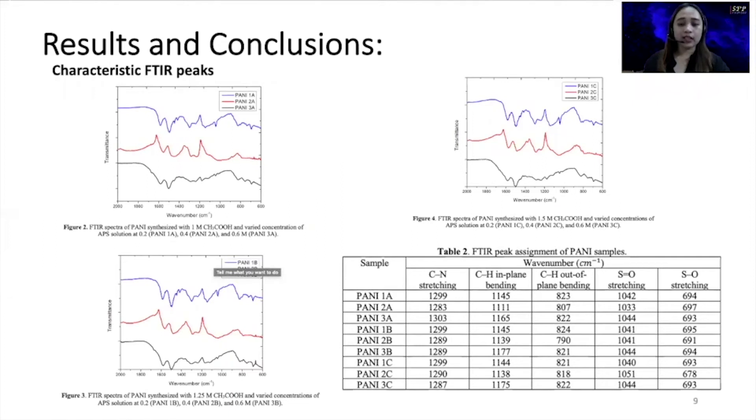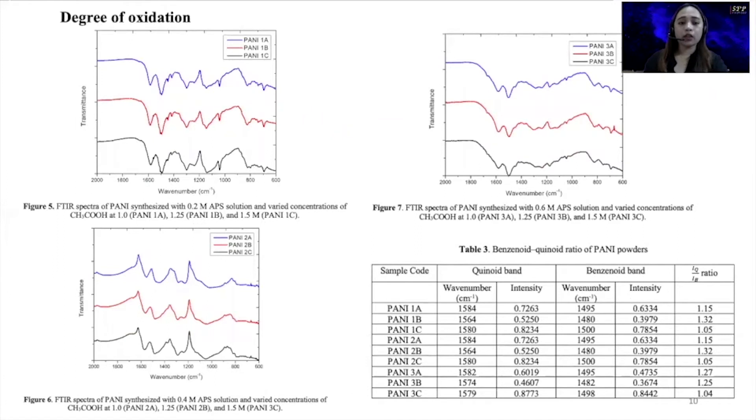Furthermore, the studied acetic acid concentrations do not affect the spectral features of PANI. Figures 5 to 7 depict the FTIR spectra of PANI samples for each APS solution concentration with varied concentrations of acetic acid. Table 3 shows the benzenoid-quinoid ratio of PANI powders. In conclusion, all PANI A's and B's exhibit base form. Moreover, all PANI C's having lower degrees of oxidation may be emeraldine salt form. Finally, further characterization techniques and conductivity measurement are necessary to confirm these claims.